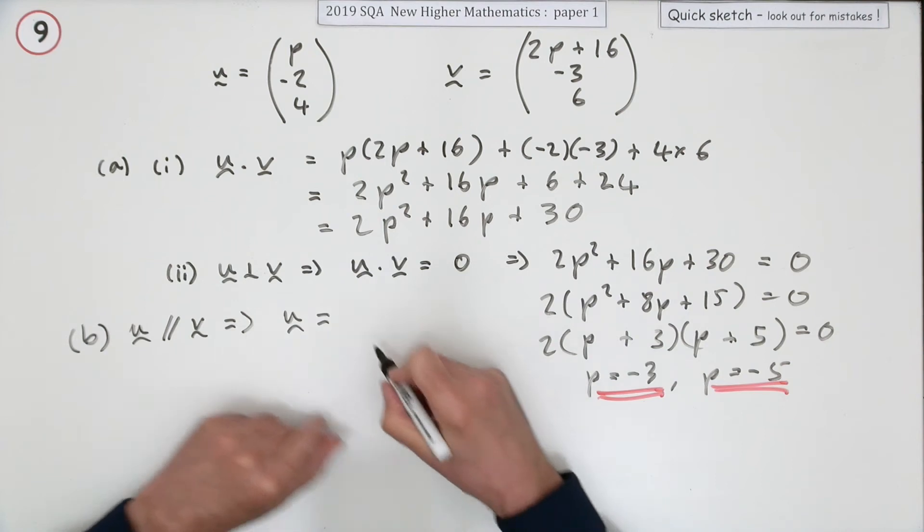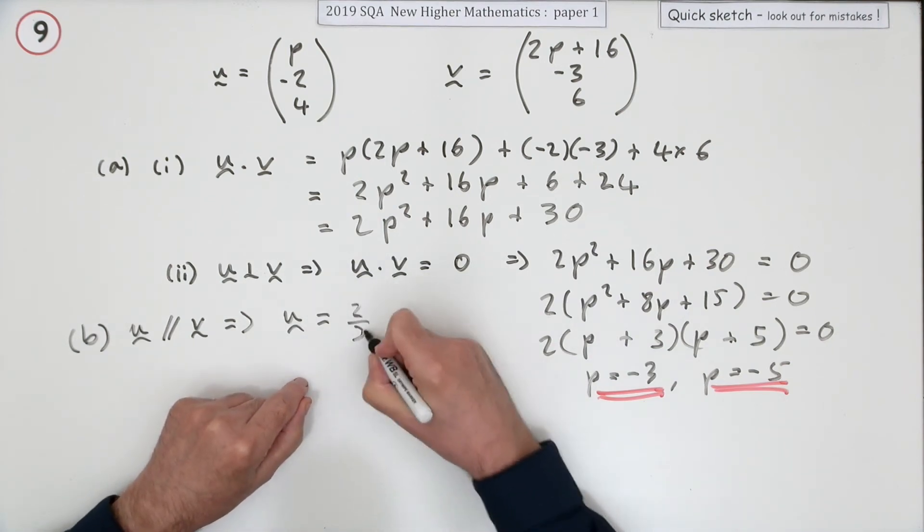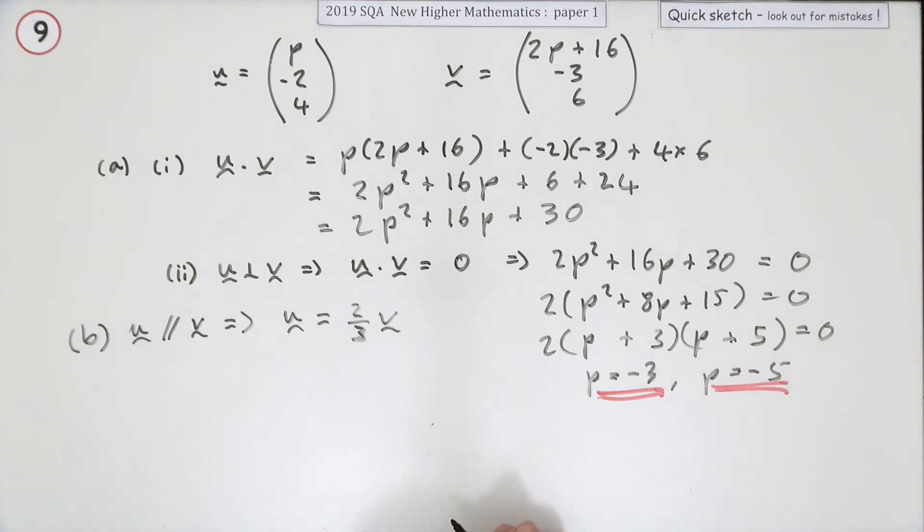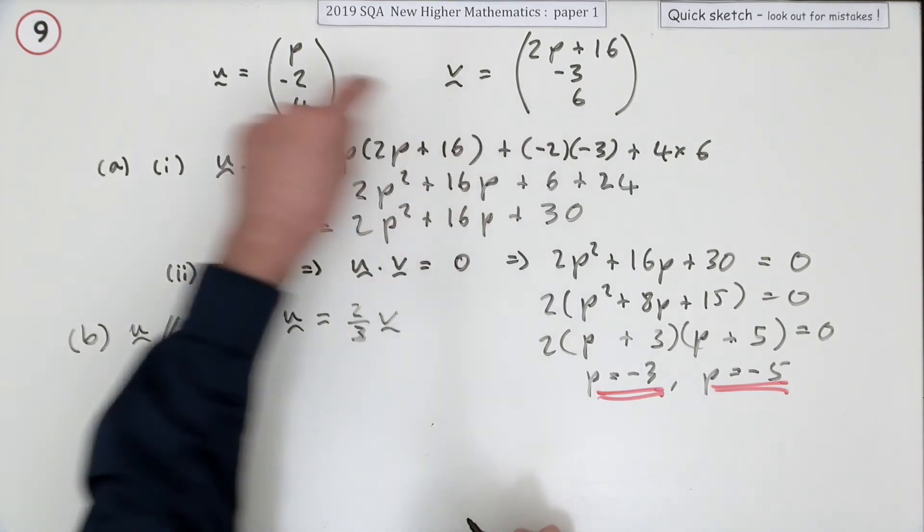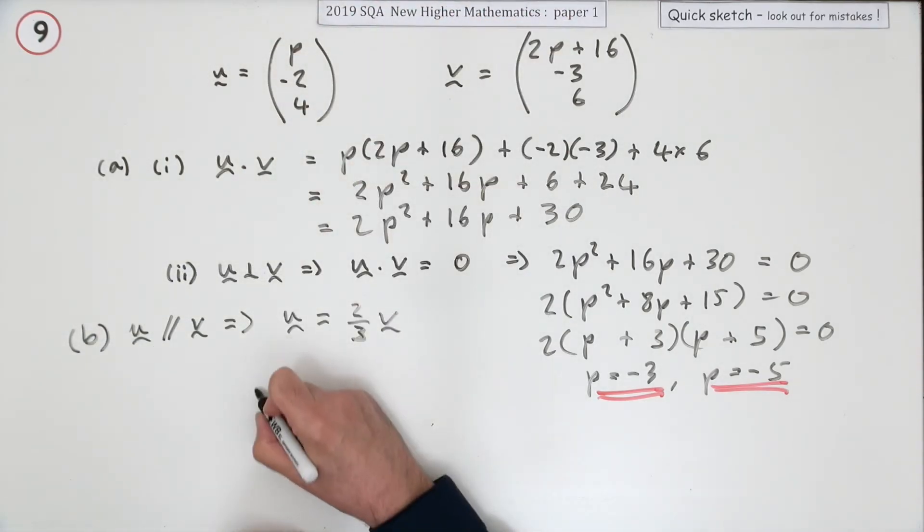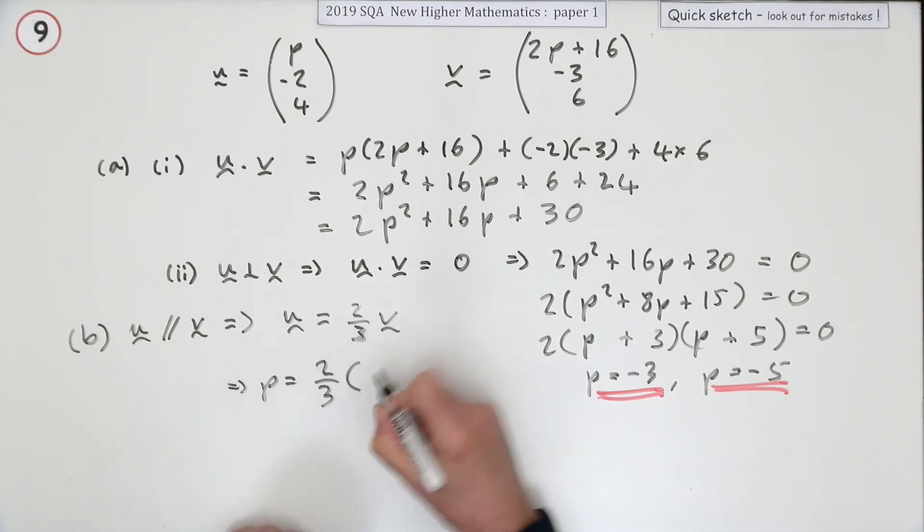-2 upon 3. It's two-thirds of it. u has to be two-thirds of v in all its components. That's two-thirds of this one, that's two-thirds of this one. So this x component must be two-thirds of that x component, so that means that p must be two-thirds of 2p plus 16.